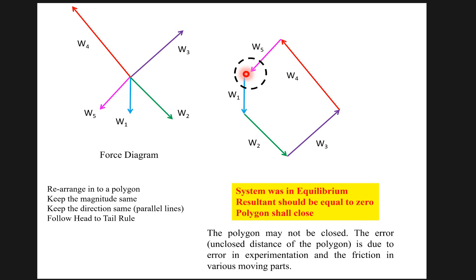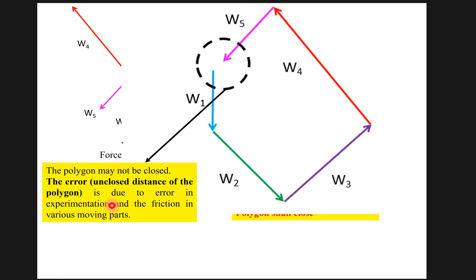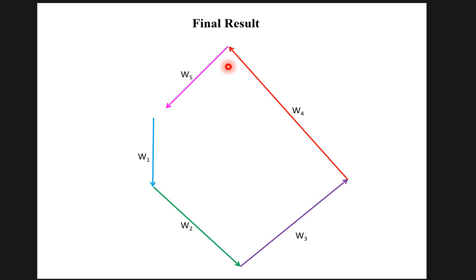Tabulate the values in the end. The polygon may not be closed. The error in closing distance of the polygon is due to the error in experimentation and the friction in the apparatus. You can see the close-up of this polygon. The polygon is not closed, it means it's giving error. This is your final result.